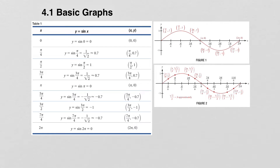First, let's take a look at this table. For the values of x, we are plugging in all of these angles between 0 and 2 pi. For the y value, we are looking at the sine of those angles. So when x is 0, sine of 0 is 0. When x is pi over 4, sine of pi over 4 is 1 over radical 2, which is approximately 0.7.